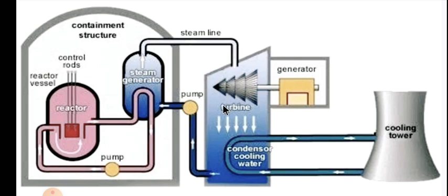As the high-pressure steam hits the turbine blades, its pressure decreases though the temperature remains the same. The exiting low-pressure steam then passes through a condenser, which is a heat exchanger where heat is transferred from the steam to the cooling water, and the steam gets cooled.